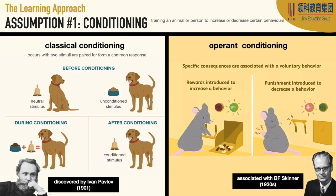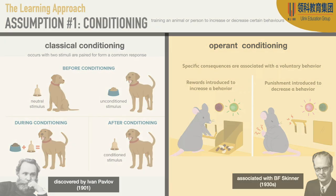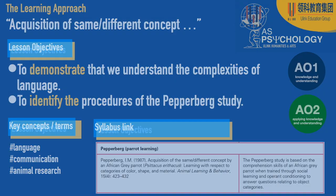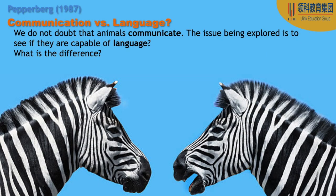Let's get into the study. I'm going through some of these slides rather quickly, so feel free to pause. We want to see if a parrot can acquire the concept of same or different. Keep in mind that language and communication are two separate phenomena. Animals communicate — you can tell when your dog is happy, you can tell when he wants to eat.